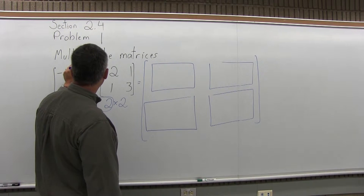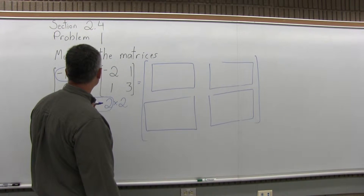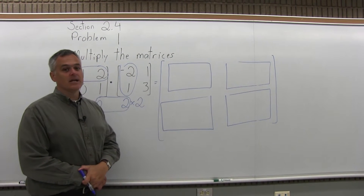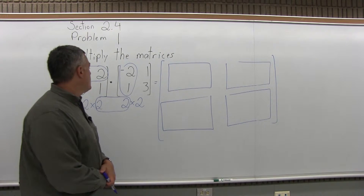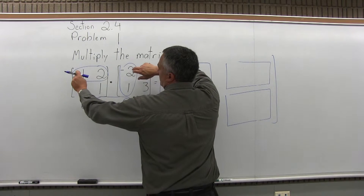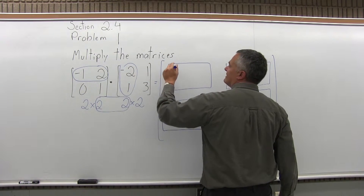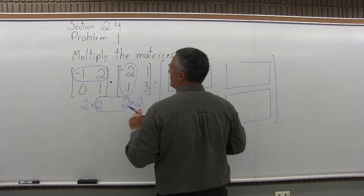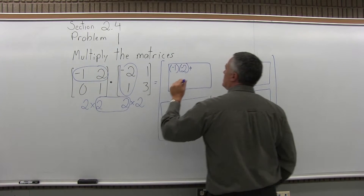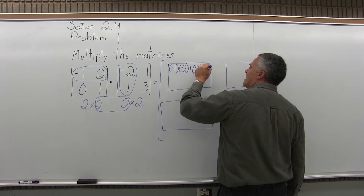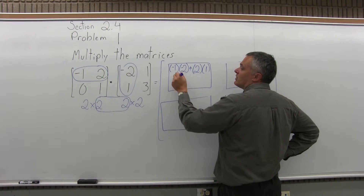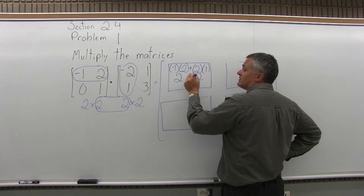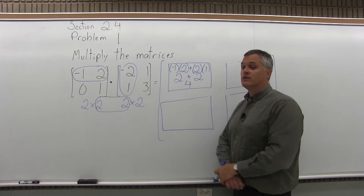The first number is going to come from multiplying the top row of the first matrix—negative 1, positive 2—times the first column, or left column of the second matrix—negative 2 with a 1 underneath. First times first is negative 1 times negative 2, plus second times second, which is positive 2 times positive 1. Negative 1 times negative 2 gives positive 2, and 2 times 1 gives another positive 2. Those get added together, so the final answer for that box is 4.